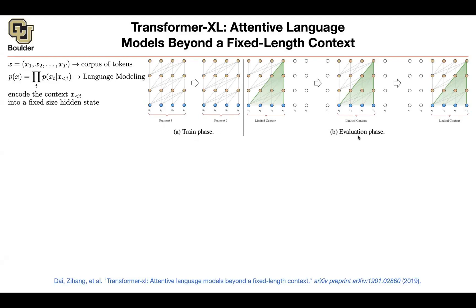But then when you do your evaluation, this word here is going to always have this context — four words as its context. As you go to the next prediction, this context here is going to get forgotten. When you go to the next one, this context here is going to get forgotten. So you always have a limited context.